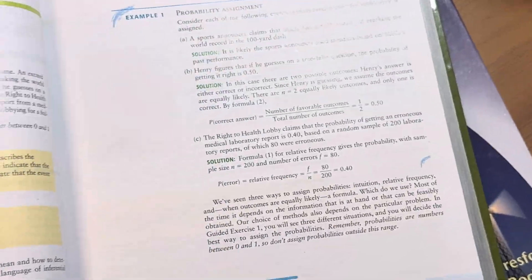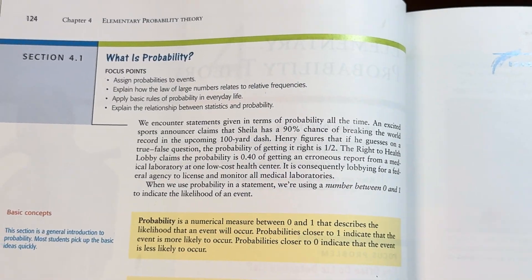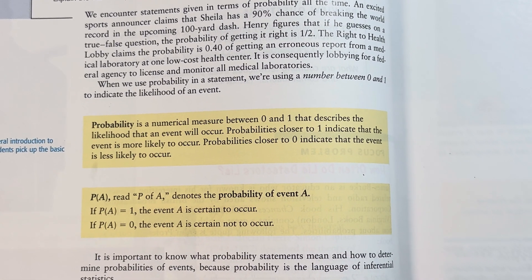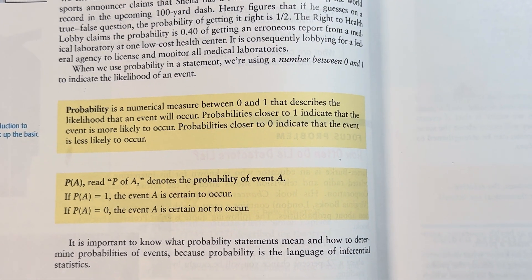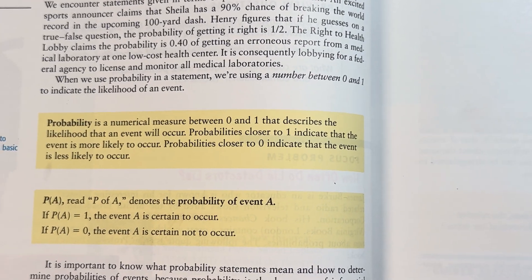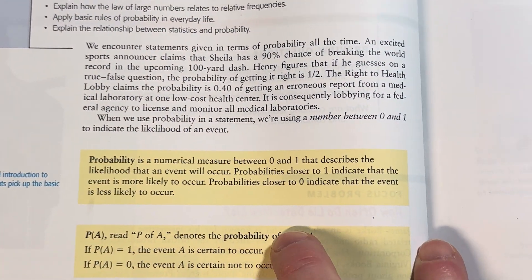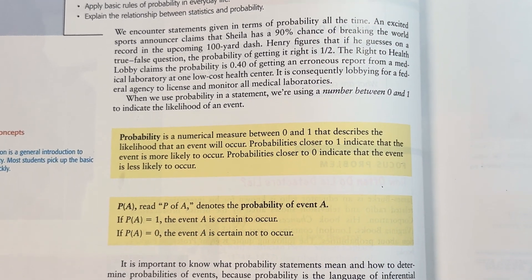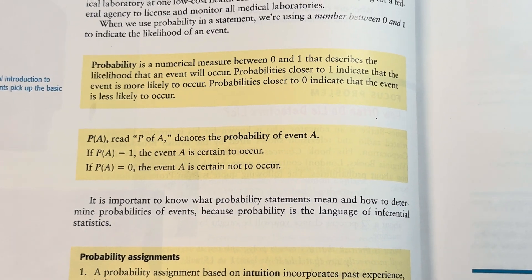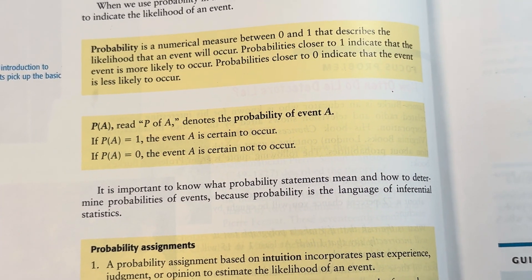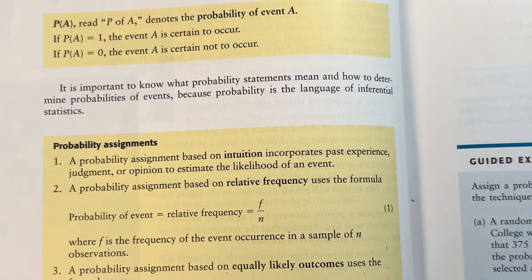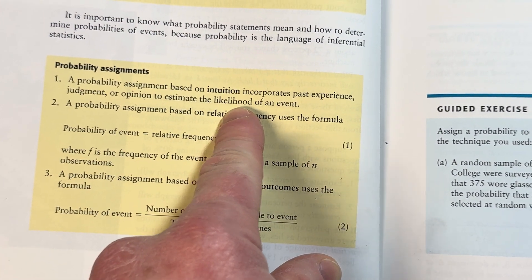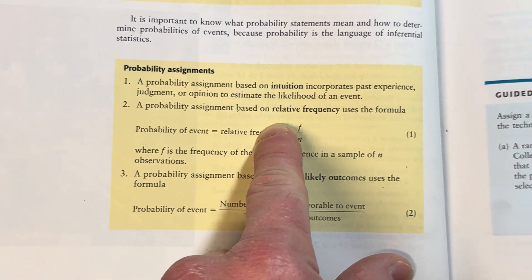It's got a nice layout, it's a modern book. What is probability? The probability is a numerical measure between zero and one that describes the likelihood that an event will occur. That's exactly what it says in my notes — probabilities closer to one indicate that the event is more likely to occur, and probabilities closer to zero indicate that the event is less likely to occur.